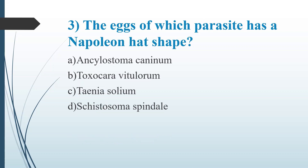Third question: The eggs of which parasite has a Napoleon hat shape? Option A, Ancylostoma caninum. Option B, Toxocara vitulorum. Option C, Taenia solium. Option D, Schistosoma spindale. Answer is Option D, Schistosoma spindale.